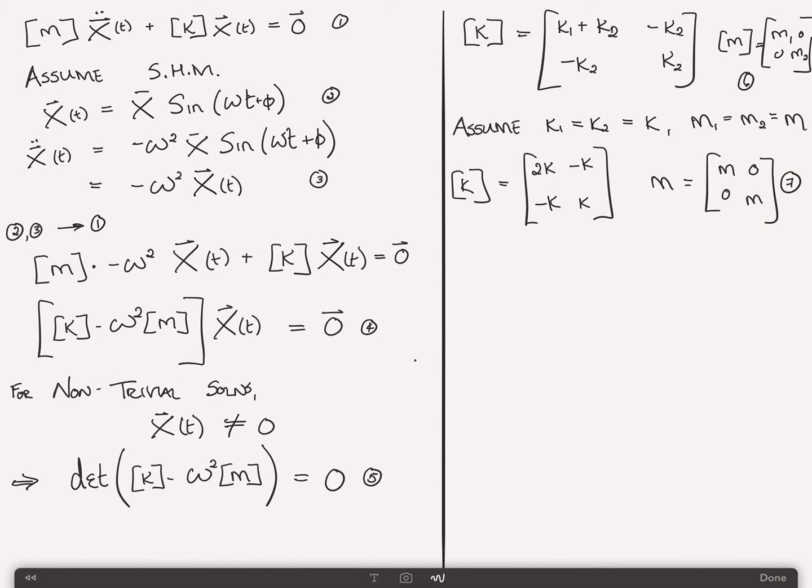So k matrix then reduces to 2k, minus k, minus k, k, and the mass matrix is very simply m, 0, 0, m. We'll call that 7. Now, finding the characteristic equation for this k and m matrix, we simply take equation 7 and plug it into equation 5. So that says the determinant of k minus omega squared m, which is 2k minus omega squared m, minus k, minus k, k minus omega squared m. And the determinant of that is equal to 0.